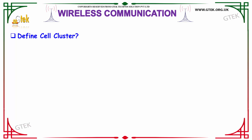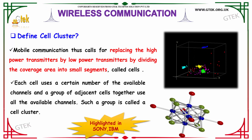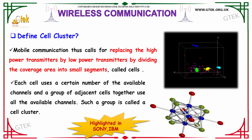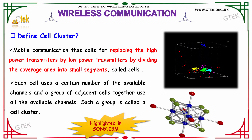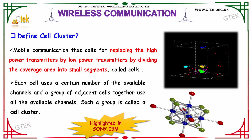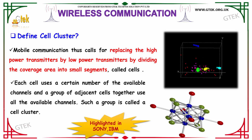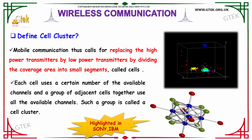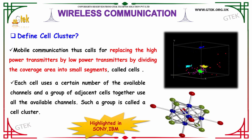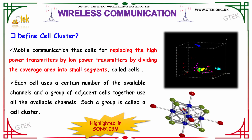Define cell cluster. In terms of mobile communication, calls for replacing high power transmitters by low power transmitters by dividing the coverage area into small segments or cells. Each cell uses a certain number of available channels, and a group of adjacent cells that together use all the available channels is said to be called as a cell cluster.